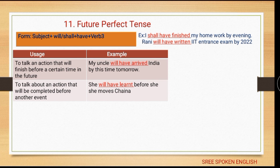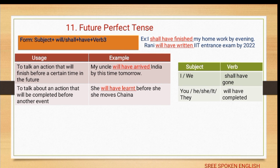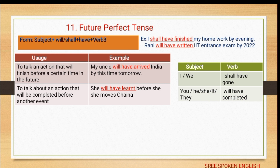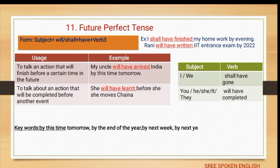The future perfect tense is used to talk about an action that will finish before a certain time in the future: 'my uncle will have arrived in India by this time tomorrow'. Chart: I and we take 'shall have' — 'I shall have gone', 'we shall have gone'; you, he, she, they take 'will have' — 'you will have completed', 'she will have completed'. Keywords: by this time tomorrow, by the end of the year, by next week, by next year.